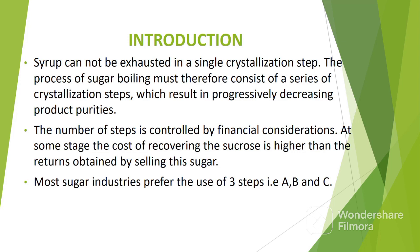Syrup cannot be exhausted in a single crystallization step. The process of sugar boiling must therefore consist of a series of crystallization steps which result in progressively decreasing product purities. The number of steps is controlled by financial considerations — at some stage, the cost of recovering the sucrose is higher than the returns obtained by selling this sugar. Most sugar industries prefer the use of three steps, i.e. masecuite A, B and C.